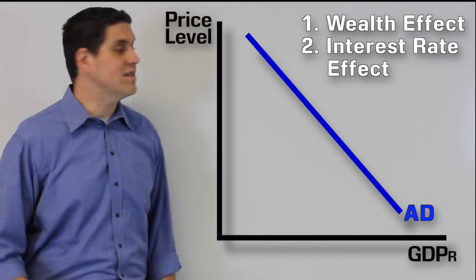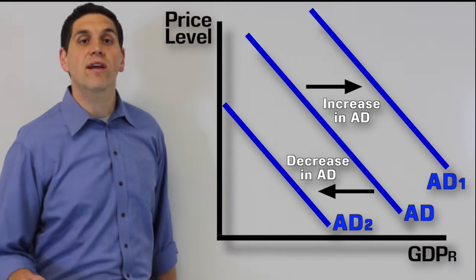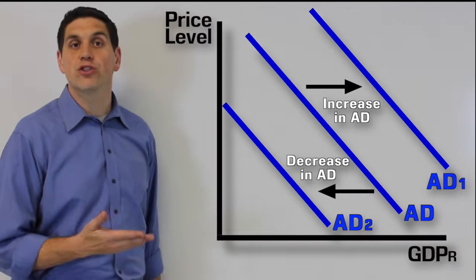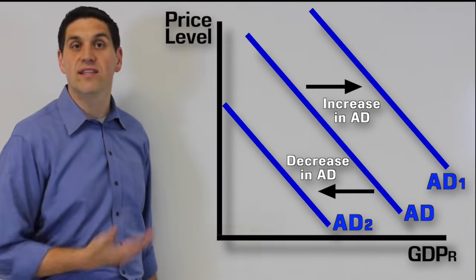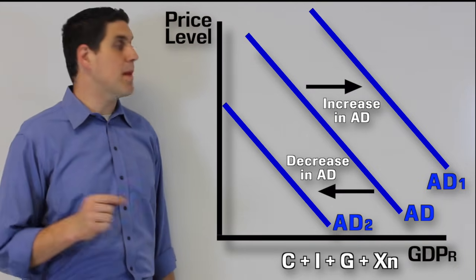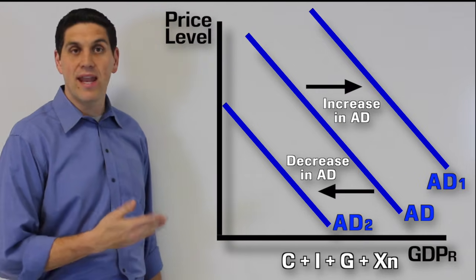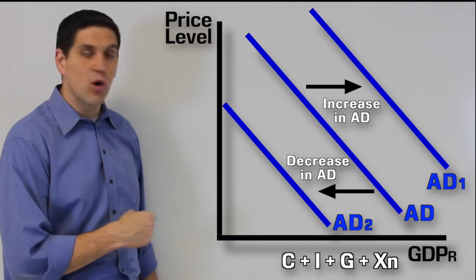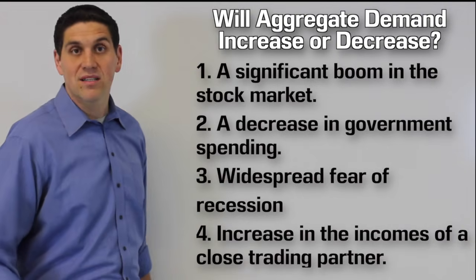The point is, the aggregate demand curve is downward sloping. Like a market demand curve, the aggregate demand curve will also shift. An increase is to the right, and a decrease is to the left. Since aggregate demand is made up of the four components of GDP — C, I, G, and XN — anything that causes those to change will shift aggregate demand. So let's practice.